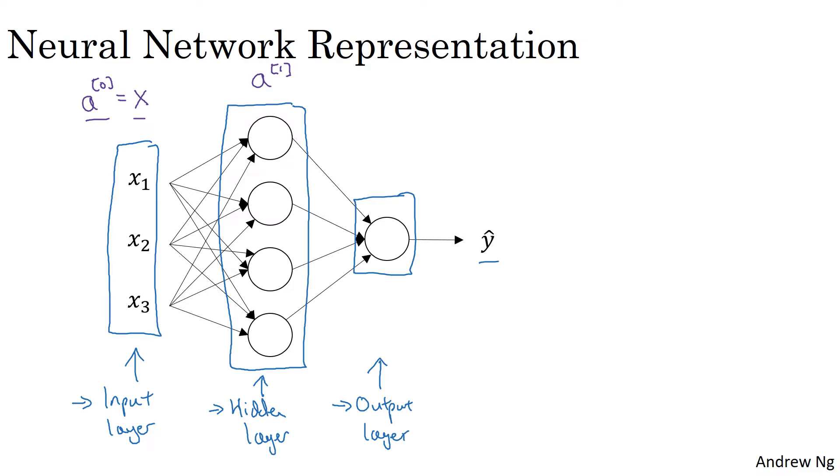So in particular, this first unit or this first node will generate the value A superscript square bracket 1, subscript 1. This second node will generate the value, now with a subscript 2, and so on.